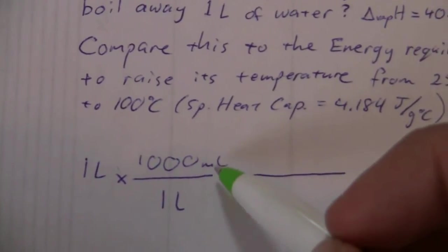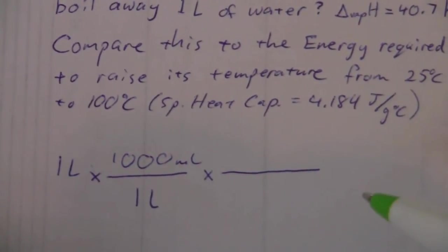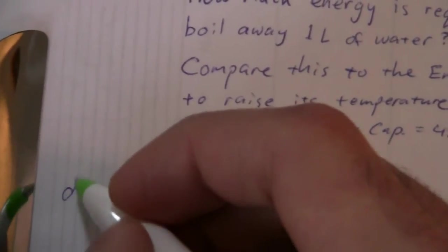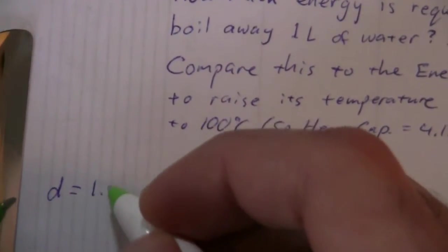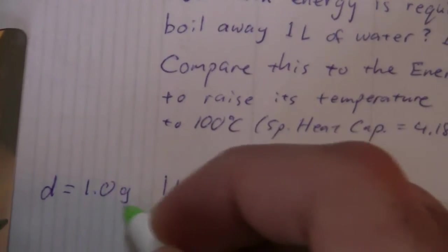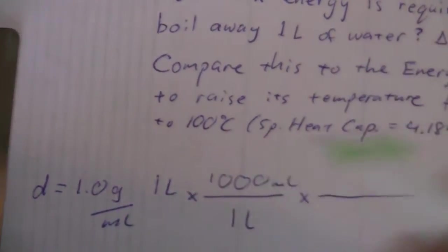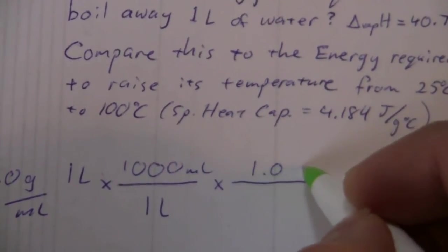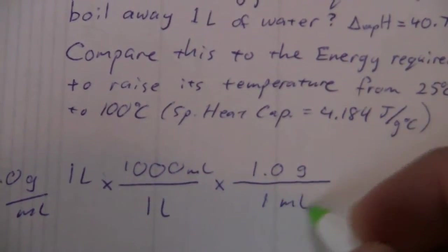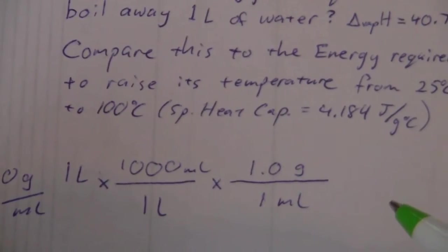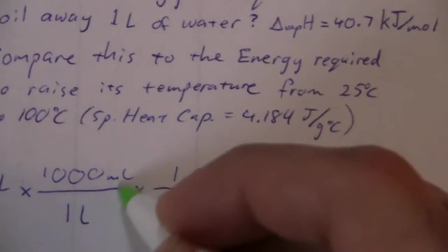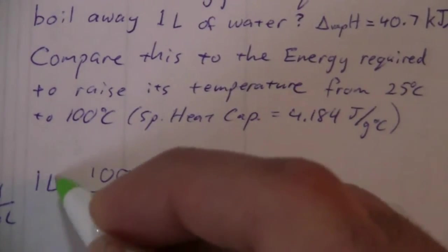So in order to go from volume units to mass units, we need density. And the density, of course, for water, 1.0 grams per milliliter. So here are the milliliters and 1.0 grams per 1 milliliter of the water. Now we're in grams. Our milliliters cancel and our liters have canceled.